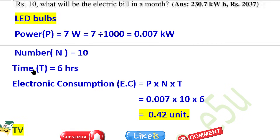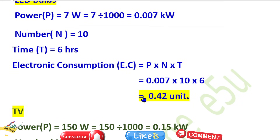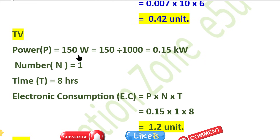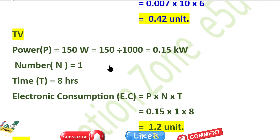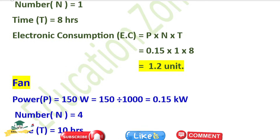Each LED bulb: 7 watt = 0.007 kilowatt. Number = 10, time = 6 hours. Consumption = P × N × T = 0.42 units. TV: power = 150 watt = 0.15 kilowatt, number = 1, time = 8 hours. Consumption = 1.2 units.